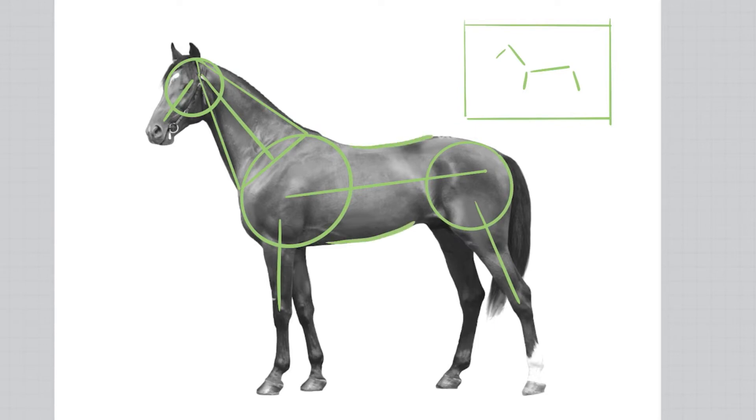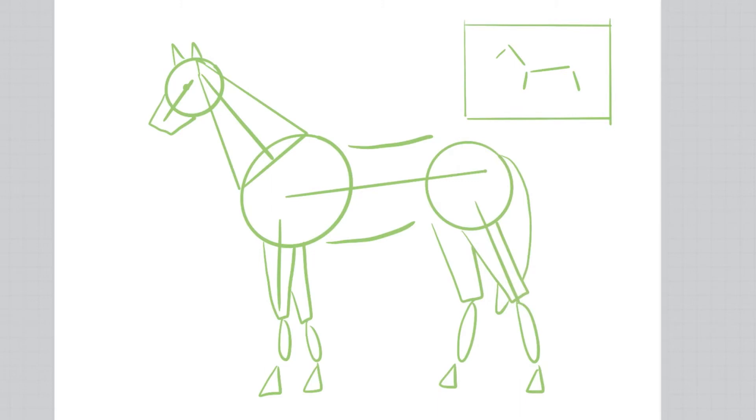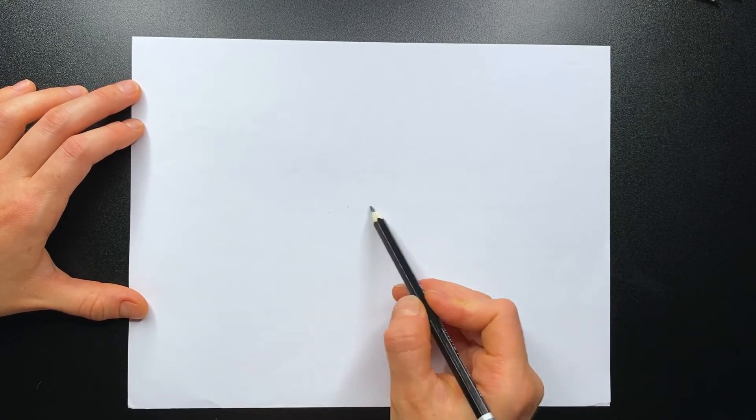Finish drawing your horse by adding simple geometric shapes to identify where the head is, the legs and the tail would be. That's how your rough drawing should look like. Let's try doing that on the paper using a pencil.